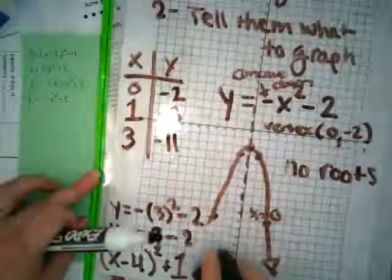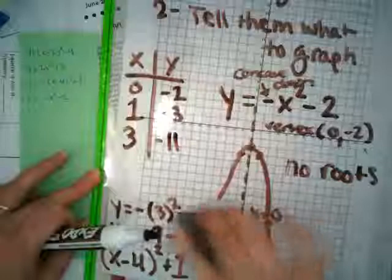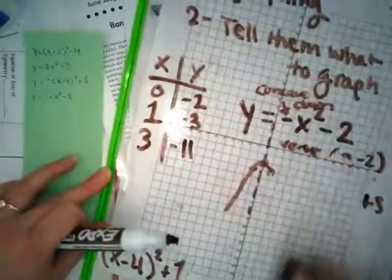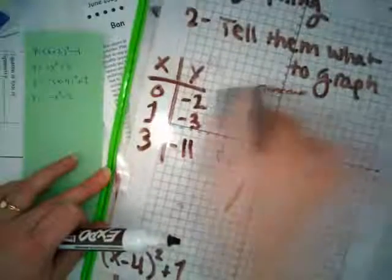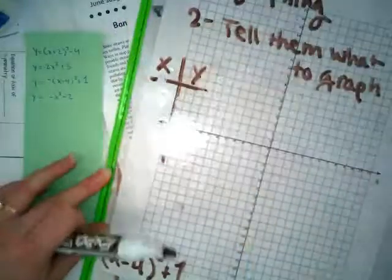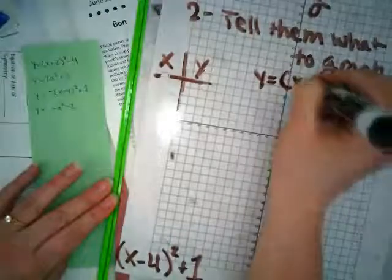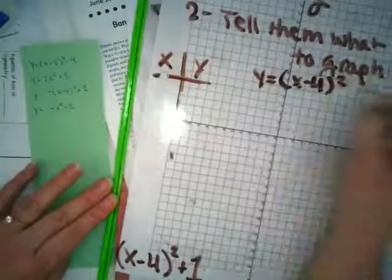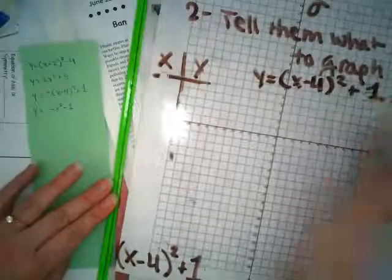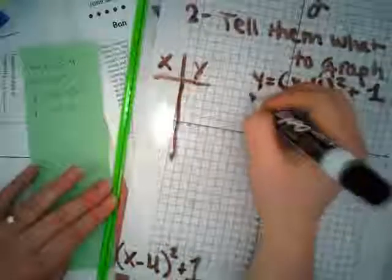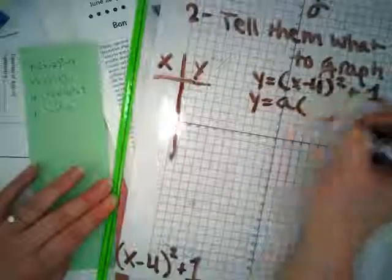I wrote down here x minus 4 squared plus 1. We're going to go back to that one. So y equals x minus 4 squared plus 1. This looks, again, like my vertex form.